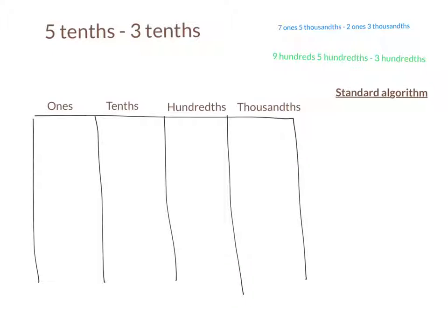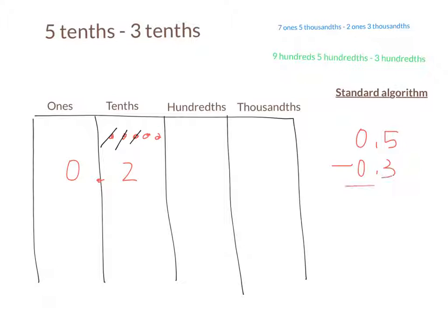If I have five tenths and I want to take away three tenths, I can model this using pictures. I can draw five dots in the tenths column — one, two, three, four, five. Now if I want to take away — subtracting means to take away — if I want to take away three of those tenths, how many do I have left? Two tenths. And I can write that in standard form. Standard algorithm means that you are writing the numbers vertically in the place value chart. Are my ones, decimal points, and tenths all lined up on top of each other? Yes.